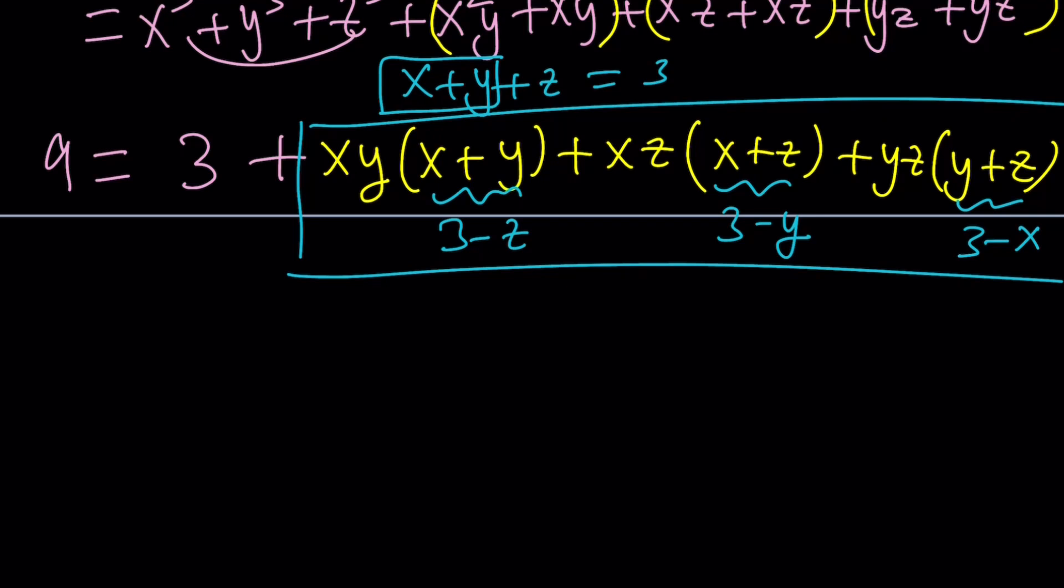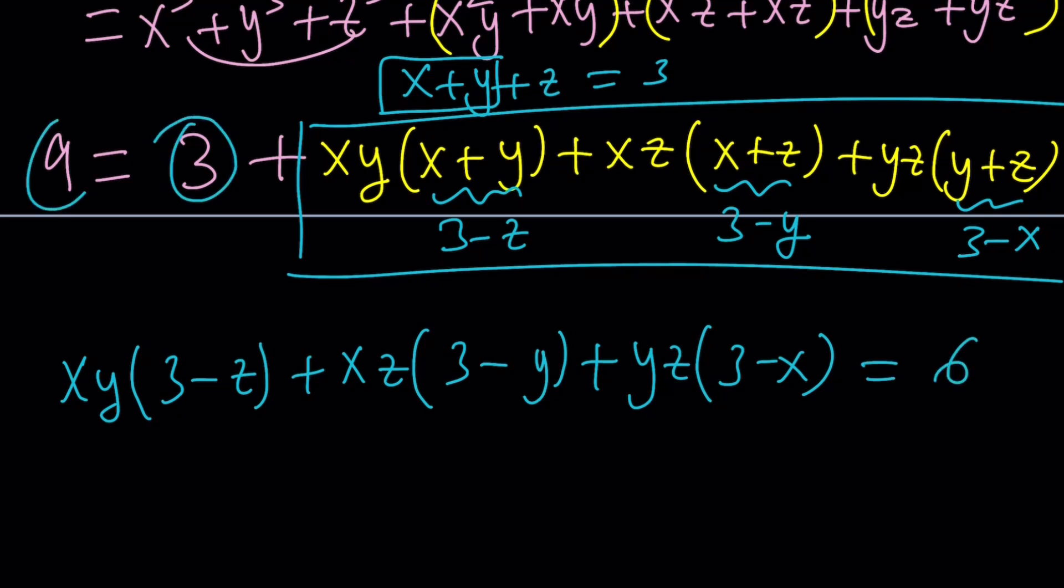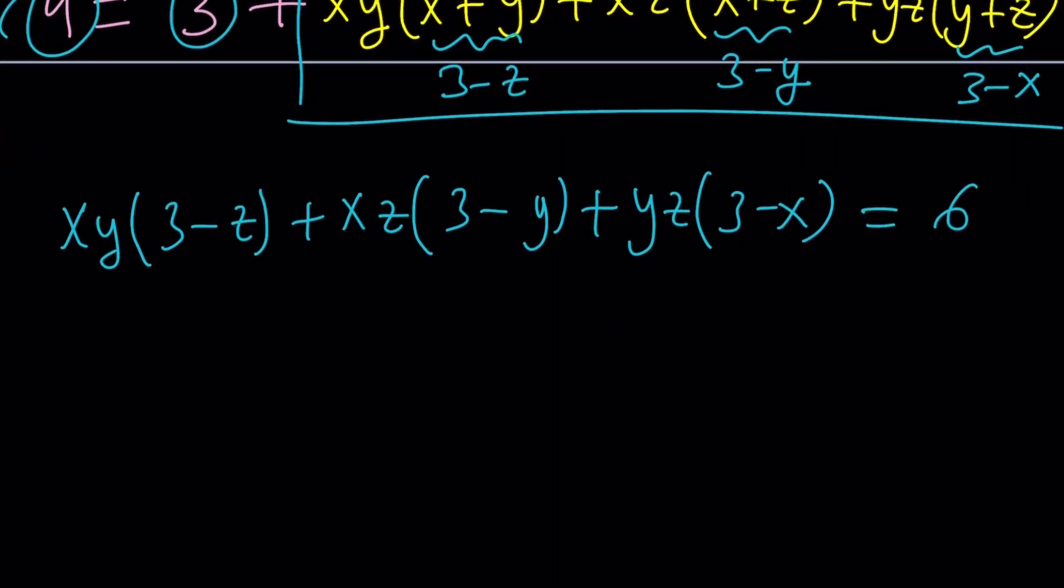Let's go ahead and write it down. xy multiplied by three minus z plus xz multiplied by three minus y plus yz multiplied by three minus x. After making all the replacements, it's supposed to equal six, because nine minus three is equal to six. Make sense? Now what are we going to do? We're going to distribute, but let me keep a long story short. You're going to get three xy, three xz, and three yz. In other words, you're going to get this sum three times. And you know what it is, remember?